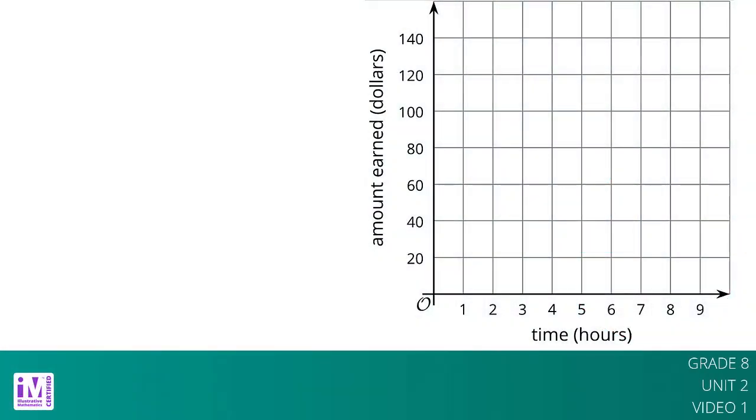Andre starts babysitting and charges $10 for traveling to and from the job, and $15 per hour. For every additional hour he works, he charges another $15. If we graph Andre's earnings based on how long he works, we have a line that starts at $10 on the vertical axis and then increases by $15 each hour.